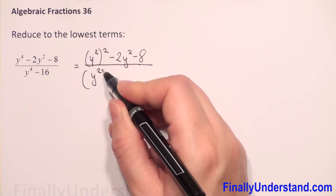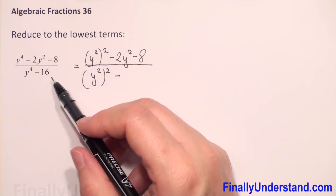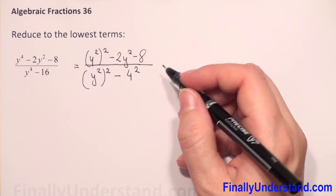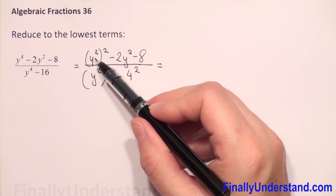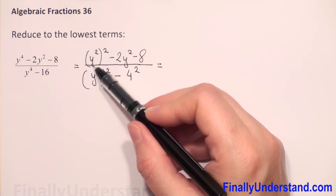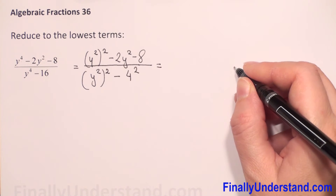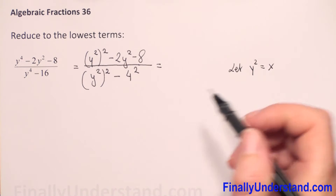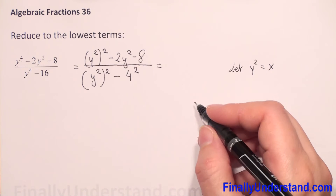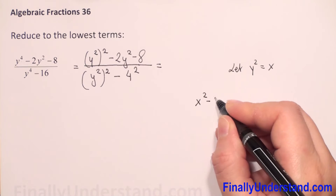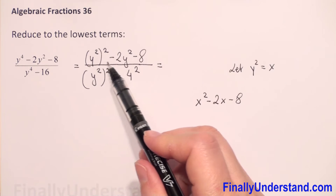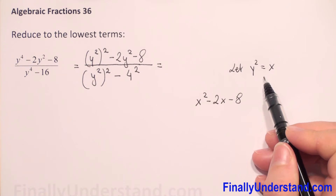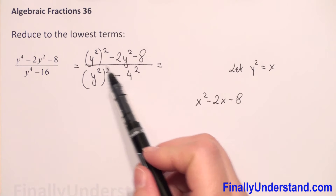And the same we will do in the denominator. We will have y squared to the second power minus 16, and we can rewrite 16 as 4 squared. Now if we substitute y squared with variable x — let's put y squared equal to x — then in our numerator we will have x squared minus 2x minus 8. Since x equals y squared, substituting x back by y squared gives the same expression as the beginning.